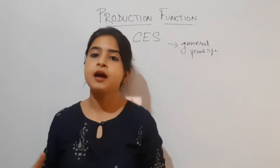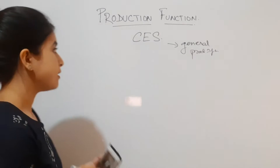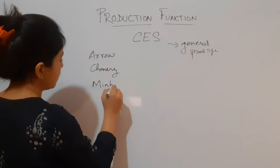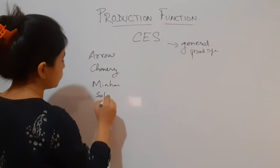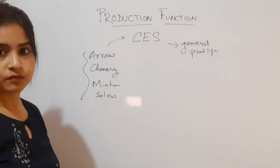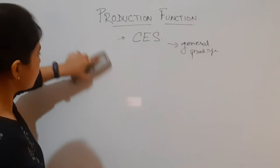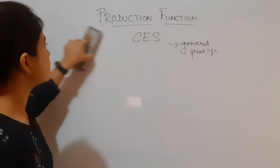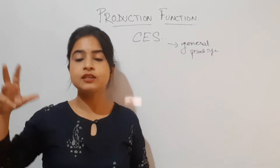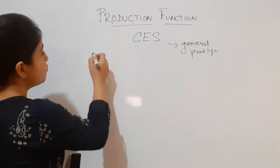The CES production function was given by four different economists: Arrow, Chenery, Minhas, and Solow. These four people gave rise to this CES production function. You might think this may not be that important, but whenever you are going for competitive exams, college exams, or university exams, you need to know these things because this is your knowledge — so don't underestimate it.